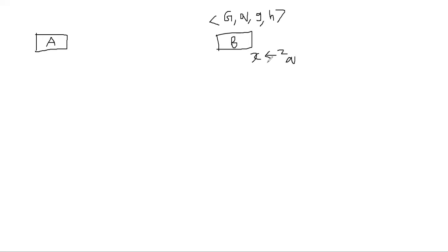And he computes G power X and keeps the X private, of course, publishes the H. So this is public. Everybody in the world knows it. And you can imagine somebody attesting the fact that these are the public parameters of Bob.